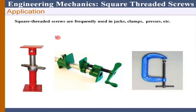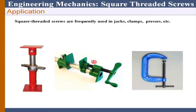Now we are going to start the next session on a screw jack. We are considering square threaded screws only, because for other screws the mechanics is more complex. We are going to consider where it is being used — in jacks, house jacks, presses, and clamps. So we call it a screw jack when square threaded screws are used in jacks, but remember there are other applications like clamps as well.